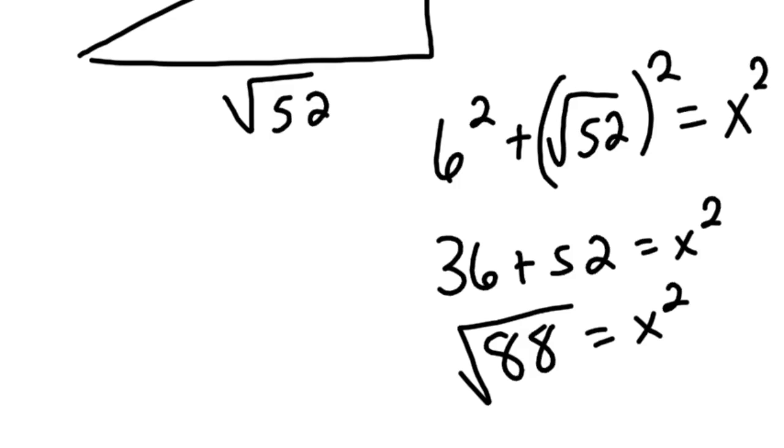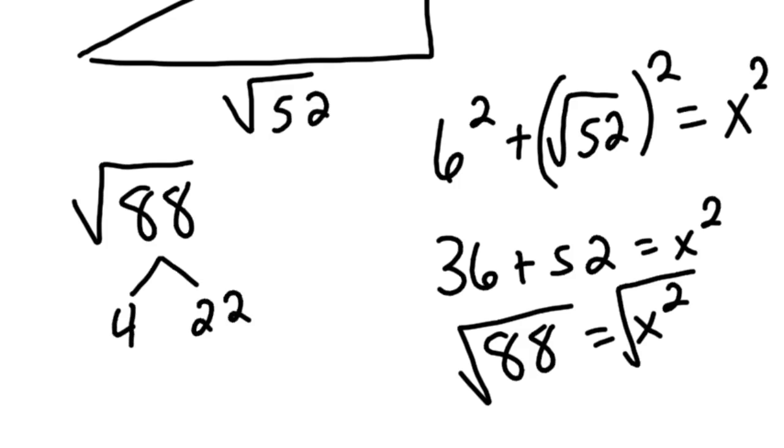Then you root that thing on both sides. And so the square root of 88. Well, the square root of 88, we could simplify. Now I'll simplify it since we're down to my answer. We've got 4 and 22. And we know the square root of 4 is 2. So it's 2 root 22. There's the simplified answer for the length.